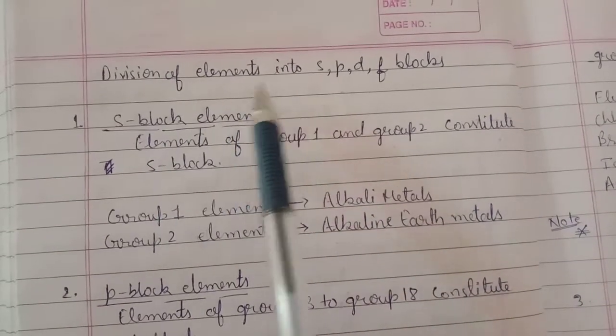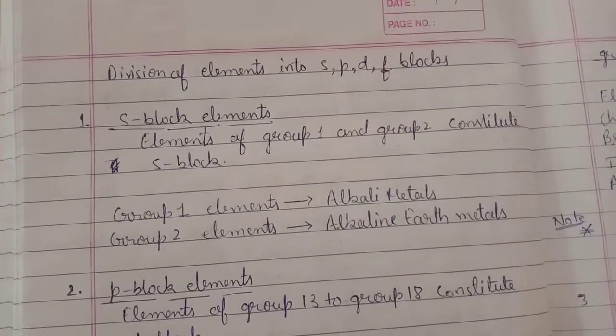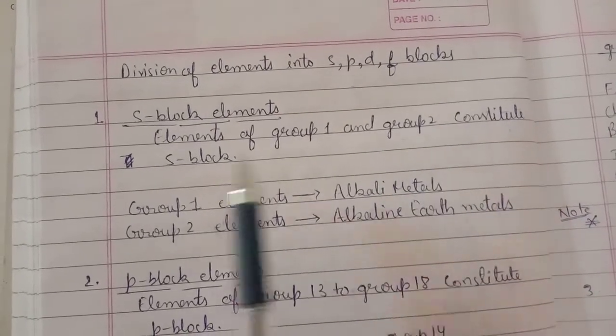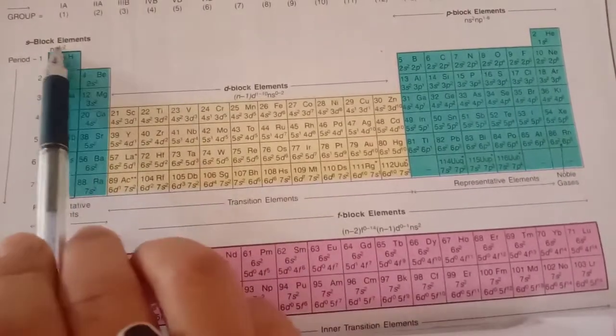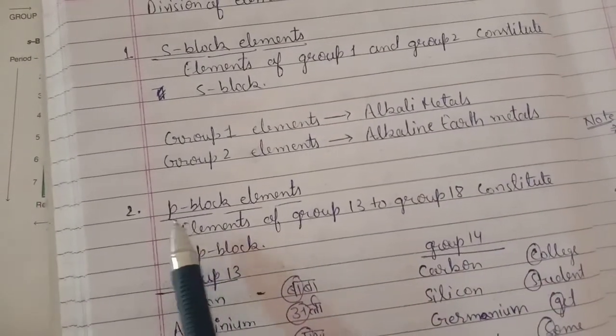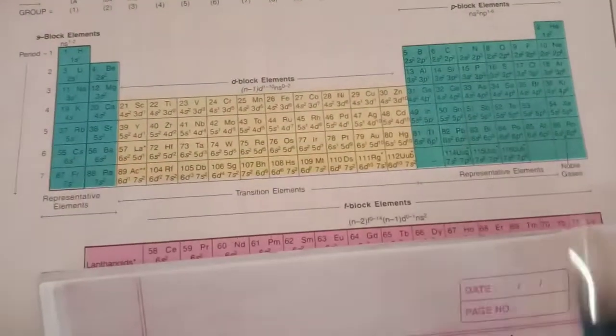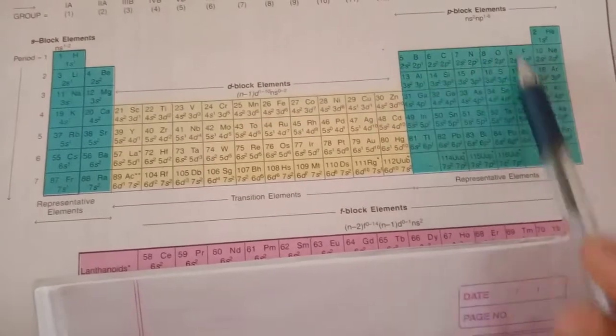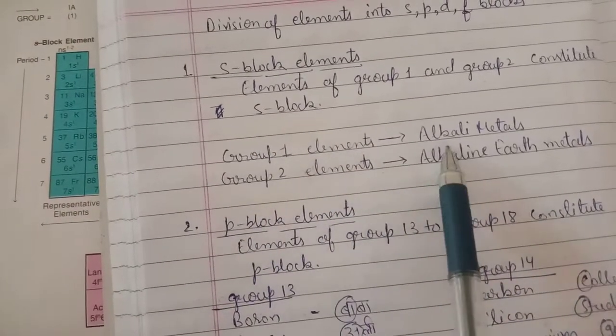Next is the division of elements into S, P, D, and F blocks. The periodic table is subdivided into four blocks. Where is the S block? S block consists of group number 1 and group number 2. Here, group number 1 and group number 2 combined are called the S block.